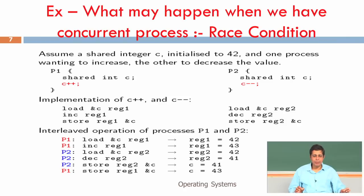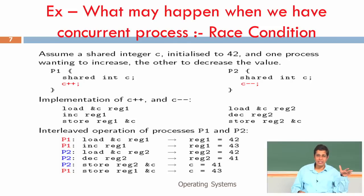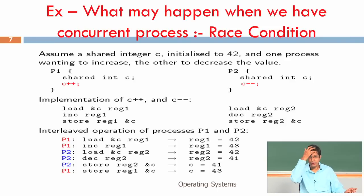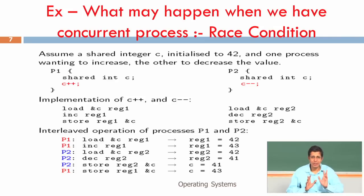So C++ followed by C-- should maintain the value of C as 42, but when they get interleaved at the assembly instruction level, we get an inconsistent value for C. This is the problem of sharing data — this is a race condition, because P1 and P2 are racing with each other, and because of that this inconsistency has happened.